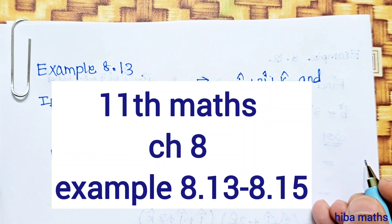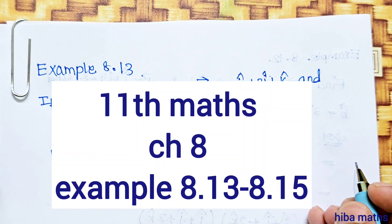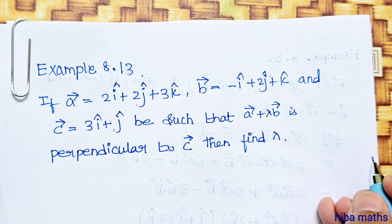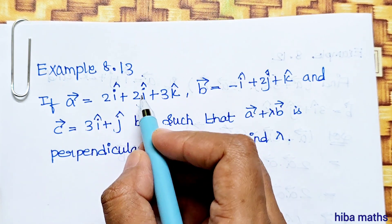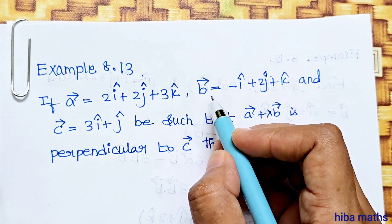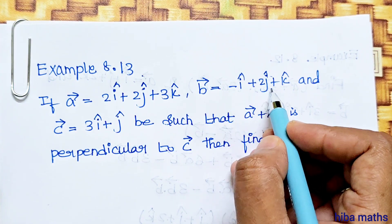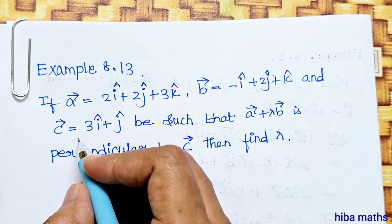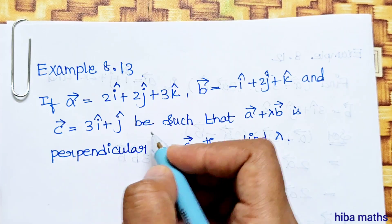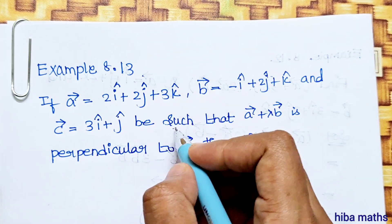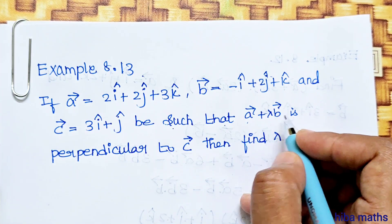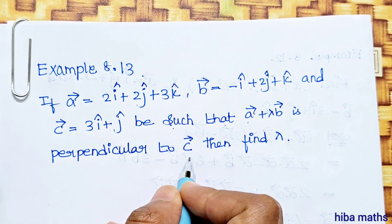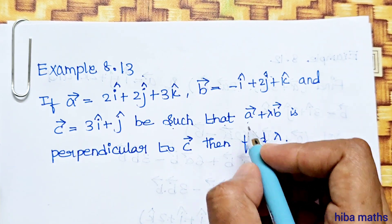Hello students, welcome to Hema Max 11th Standard Math Chapter 8 Algebra, Example 8.13. In this video: vector a is equal to 2i plus 2j plus 3k, vector b is equal to minus i plus 2j plus k, and vector c is equal to 3i plus j, such that vector a plus lambda times vector b is perpendicular to c. Then find lambda.